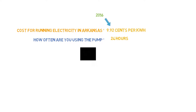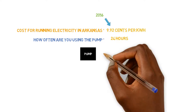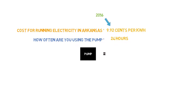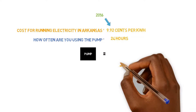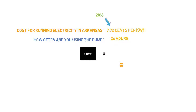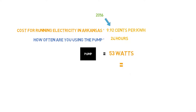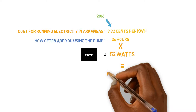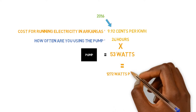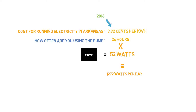From there we can calculate how many watts per day that's going to require. We go to 53 watts — that's how much you said the pump was. 53 watts times 24 hours. That's going to give us 1,272 watts per day.